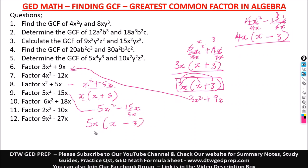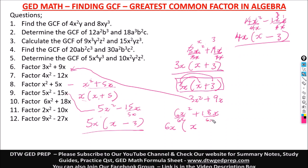For 6x² + 18x: the greatest common factor is 6 for the numbers, and x for the variable. Factoring out 6x: dividing 6x² by 6x leaves x, and dividing 18x by 6x leaves 3. The factored form is 6x(x + 3).